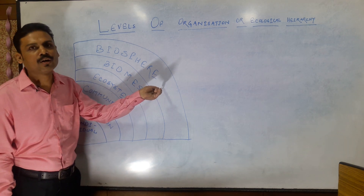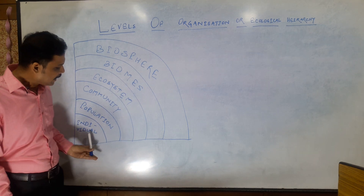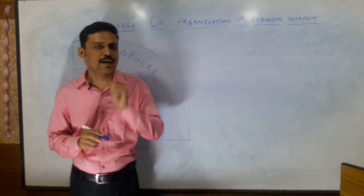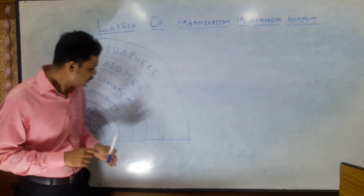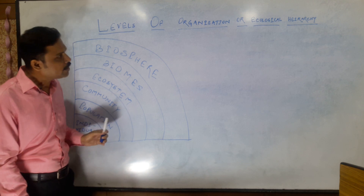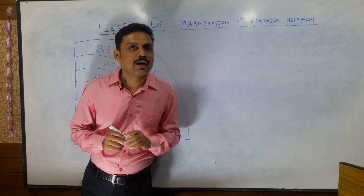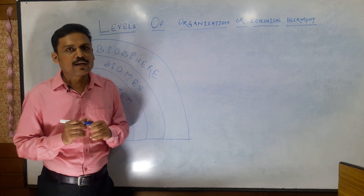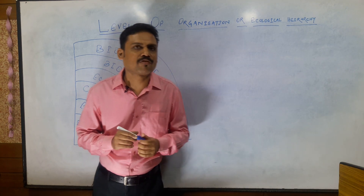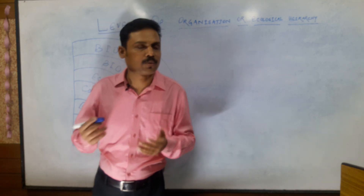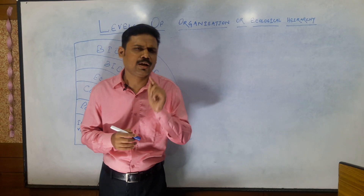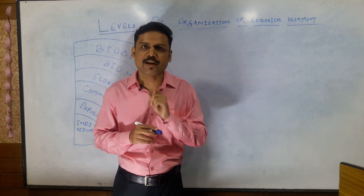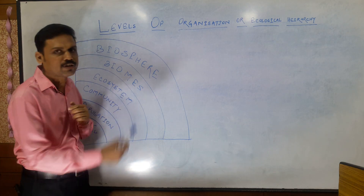At the base of this arrangement comes the individual and at the top comes the biosphere or the whole living world. In ecology, an individual is referred to as a single organism — that is, when we discuss the interaction of one animal, one plant, or microorganism. Individual is defined as an organism which is able to perform each and every function of life on its own, sustaining itself independently.